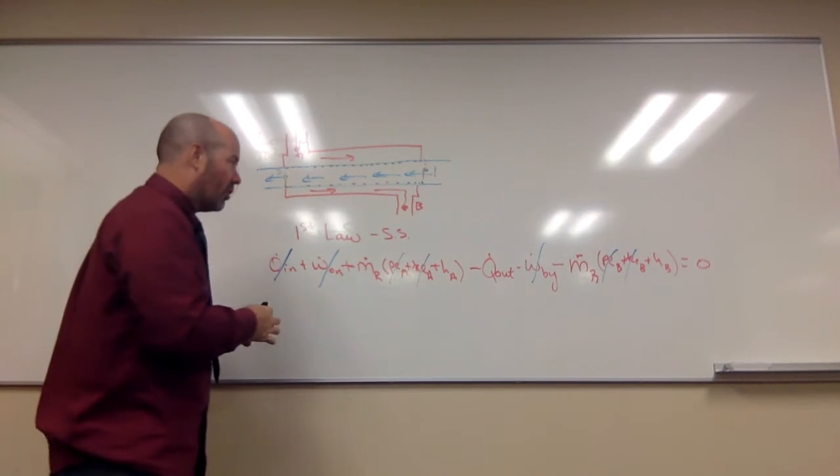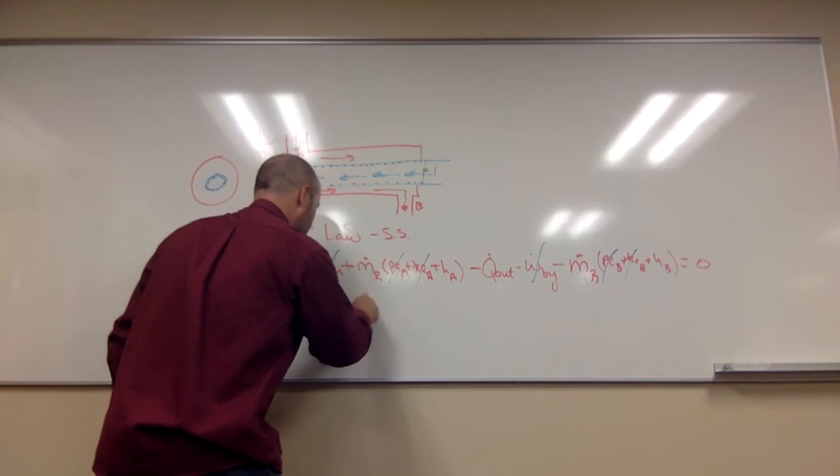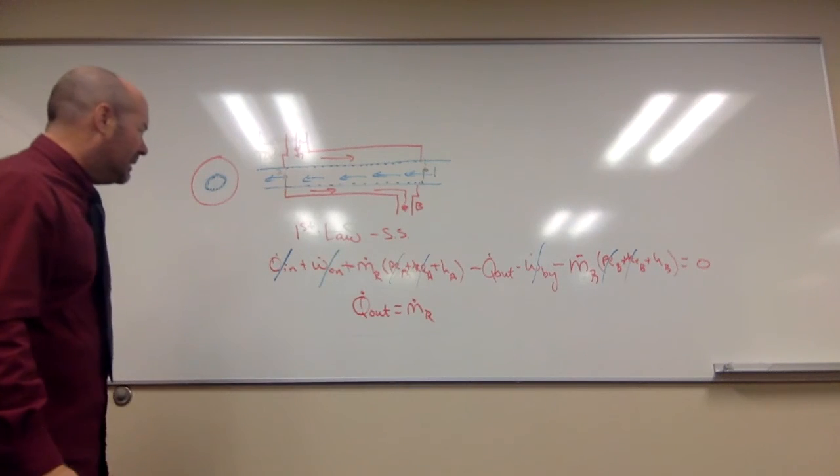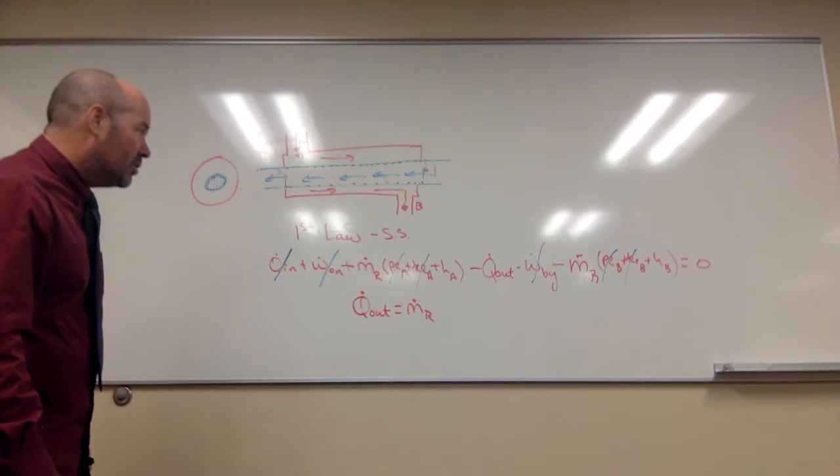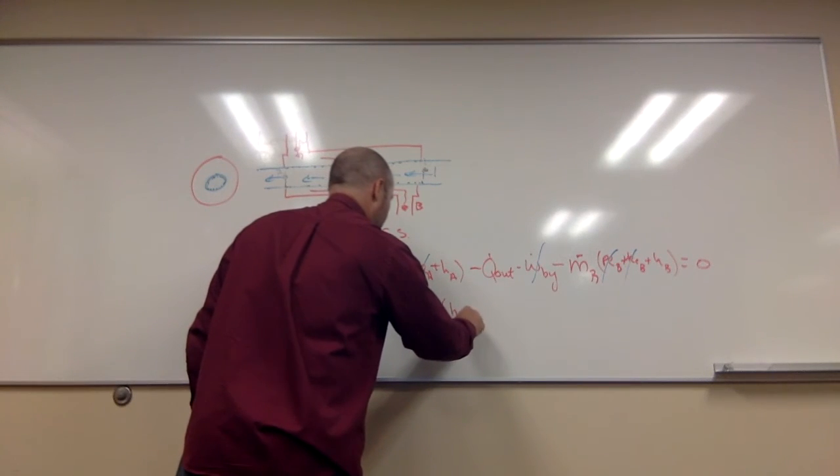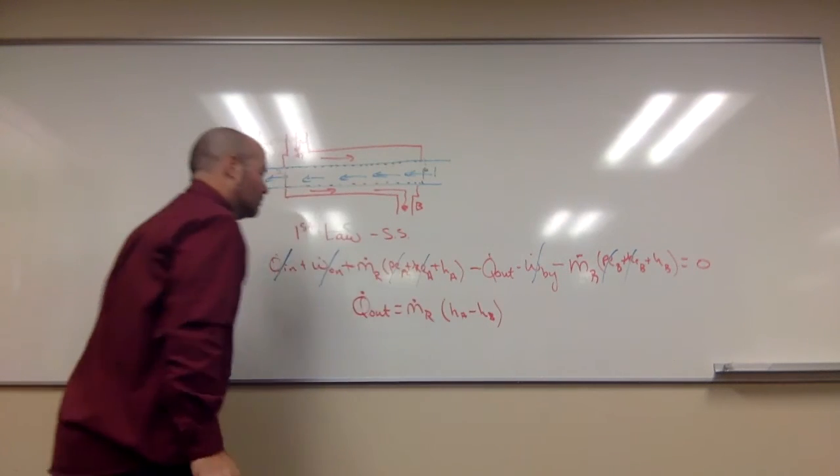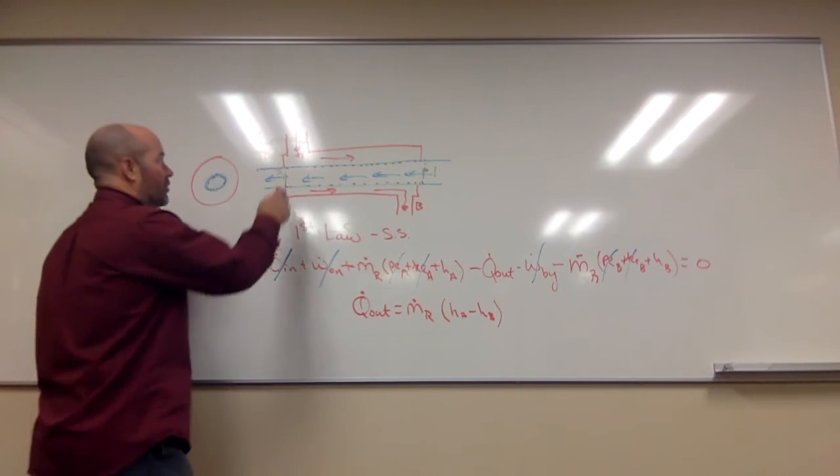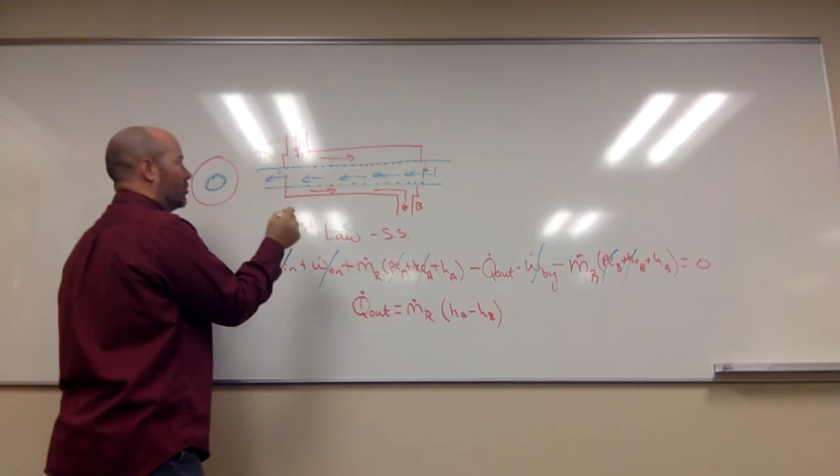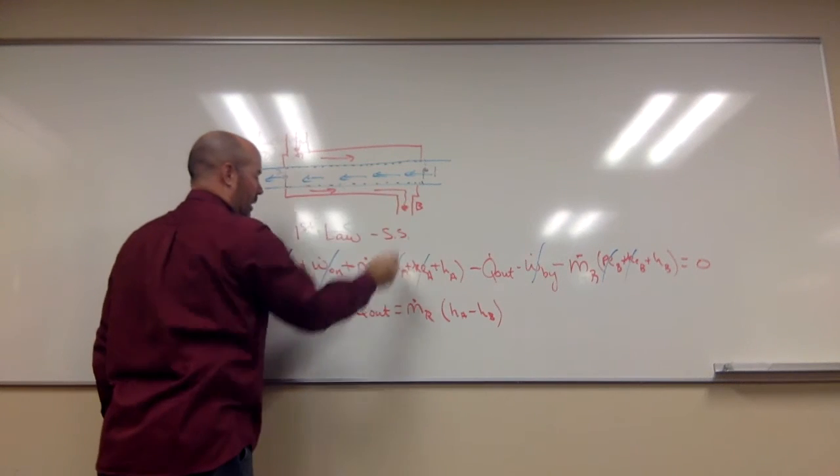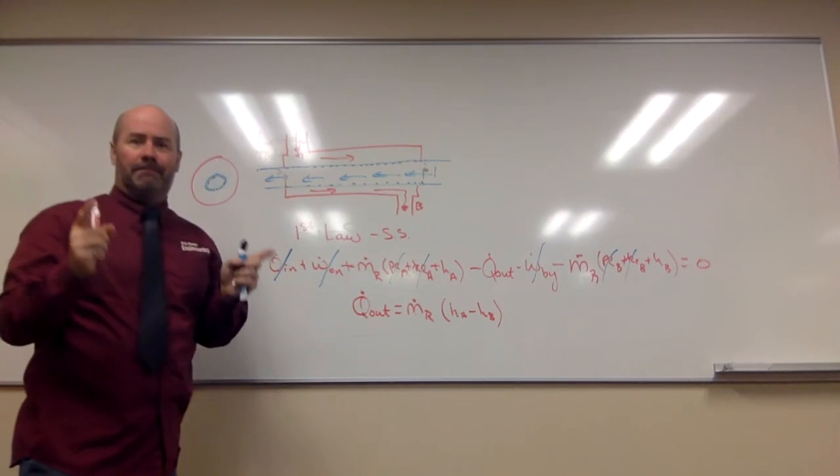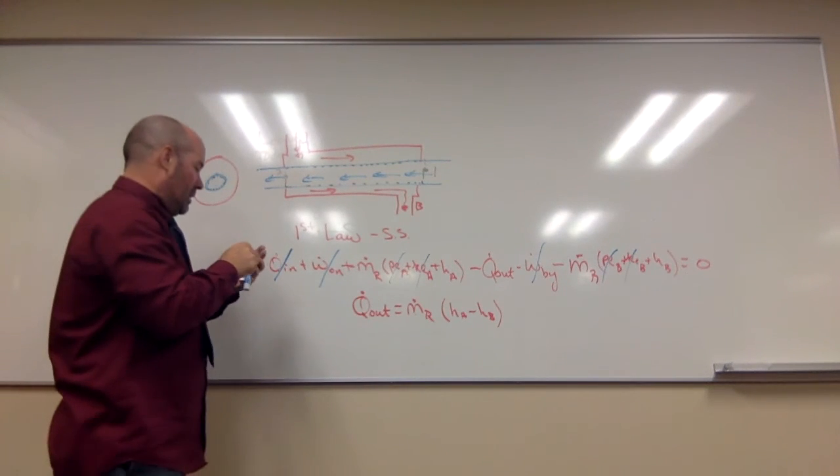Rearrange. Solve. We get rate of heat transfer out. It equals mass flow rate of the red fluid. And, doing the math here, making sure I have my algebra right, it's going to be H A minus H B. Because the H is going to be higher at A than it is at B, and that's the way the algebra works as well. Energy is leaving. How much is leaving? Mass flow rate of the fluid times the change in enthalpy. So, I'll love that H.